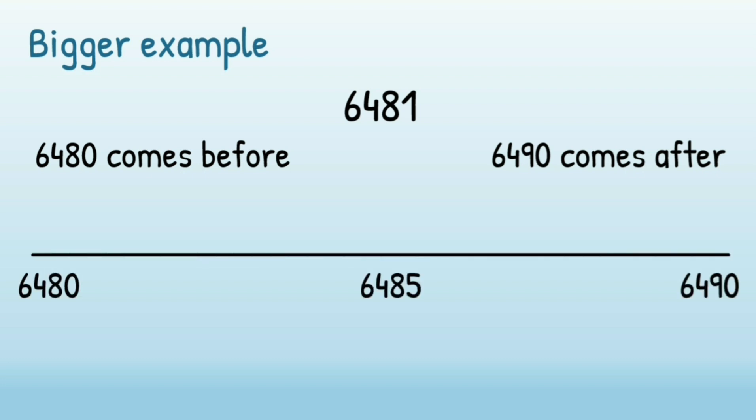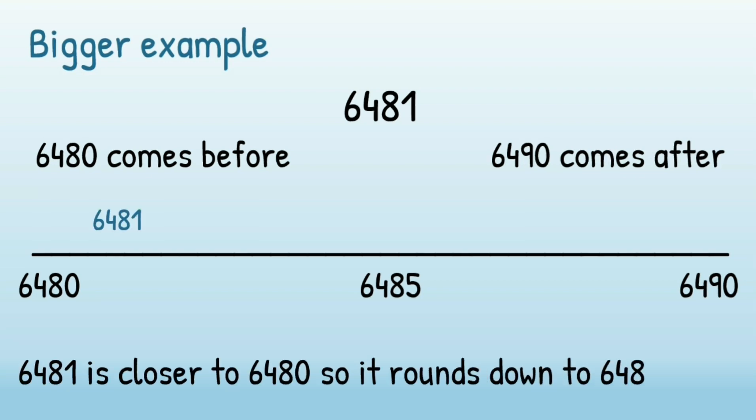You've got 6480, in the middle you've got 6485, and on the end you've got 6490. When we look at that on the number line, 6481 is closer to 6480. So it would round down to 6480 as its nearest 10.